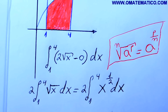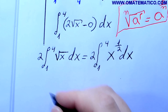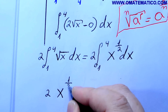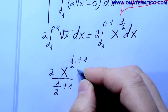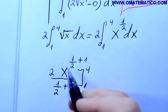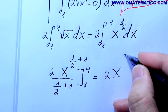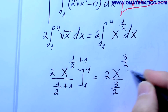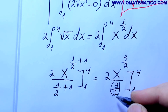Prosseguindo: colocando 1,5 mais 1, fica 2x na 1,5 mais 1, sobre 1,5 mais 1, de 1 a 4. 1,5 mais 1 fazendo vai dar x na 3,5, embaixo 3,5, também de 1 a 4. Esse 3,5 passa invertido, vai dar 2 vezes 2 terços.